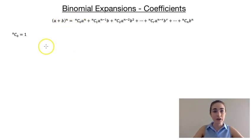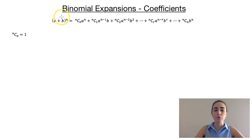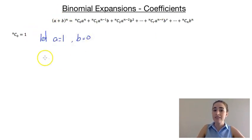The first thing that I want to prove is that nc0 is equal to 1. So to do that, I'm going to let a equal 1 and b equal 0.